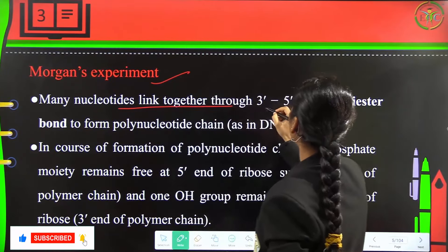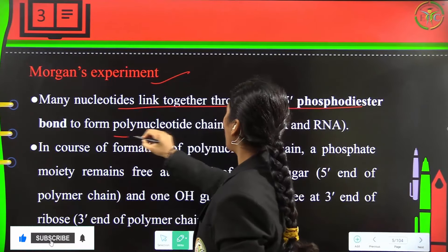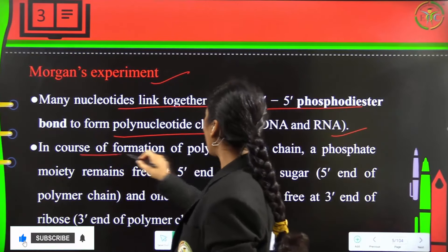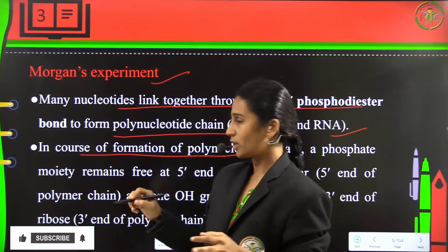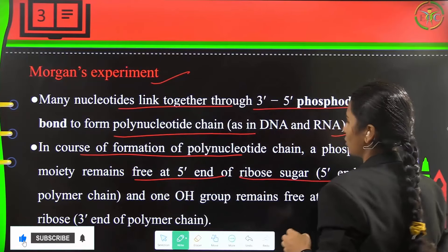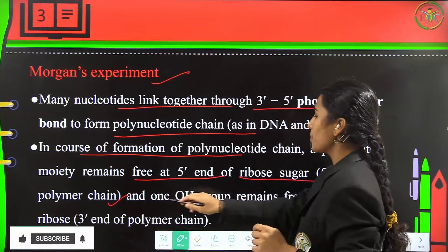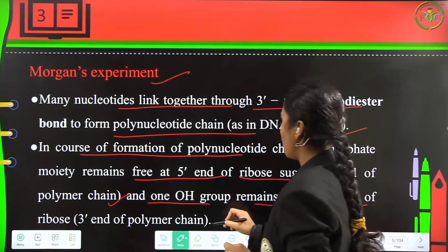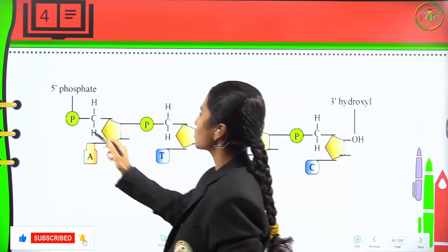Many nucleotides link together via 3' to 5' phosphodiester bonds to form the polynucleotide chain, as in DNA and RNA. In the course of formation of this polynucleotide chain, a phosphate group will remain free at the 5' end of ribose sugar, and one OH group will remain free at the 3' end of ribose, which is the 3' end of the polymer chain.